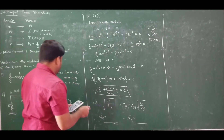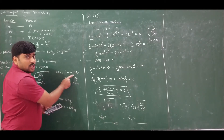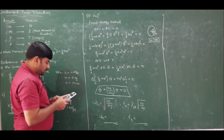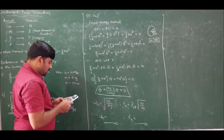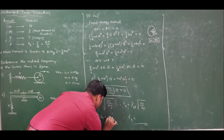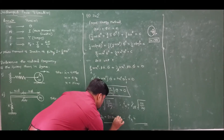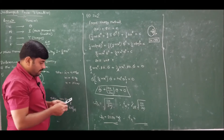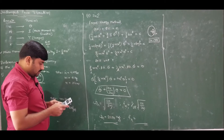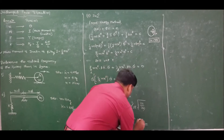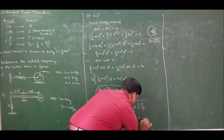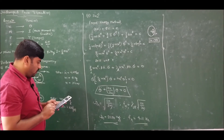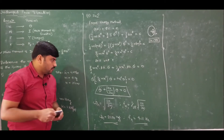Substituting values: k = 4 kN/m = 4000 N/m, m = 4 kg. Always substitute stiffness in N/m, not kN/m. So omega_n = sqrt(2 × 4000 / (3 × 4)) = 25.82 rad/s. Note that r is superfluous data here. Dividing by 2pi gives f_n = 4.11 Hz. Cross-checking: sqrt(8000/12) = 25.82 rad/s, and 25.82/2pi ≈ 4.11 Hz. Correct.